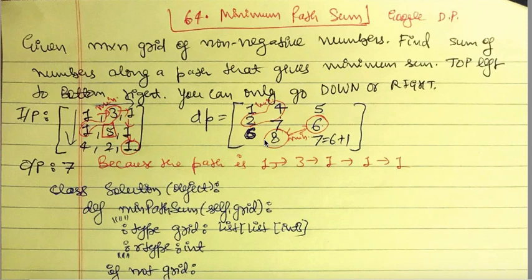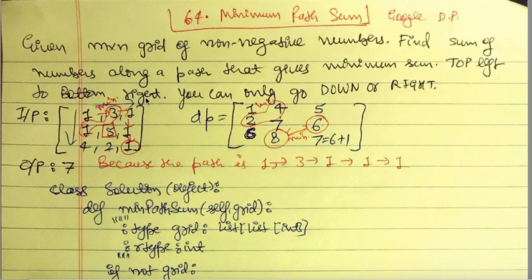Welcome to the Algorithms Made Simple series. We will talk about a dynamic programming problem named Minimum Path Sum. Let's read the problem description first. Given an M by N grid of non-negative numbers, find the path from top-left to bottom-right that gives the minimum sum, and we can only move down or right.